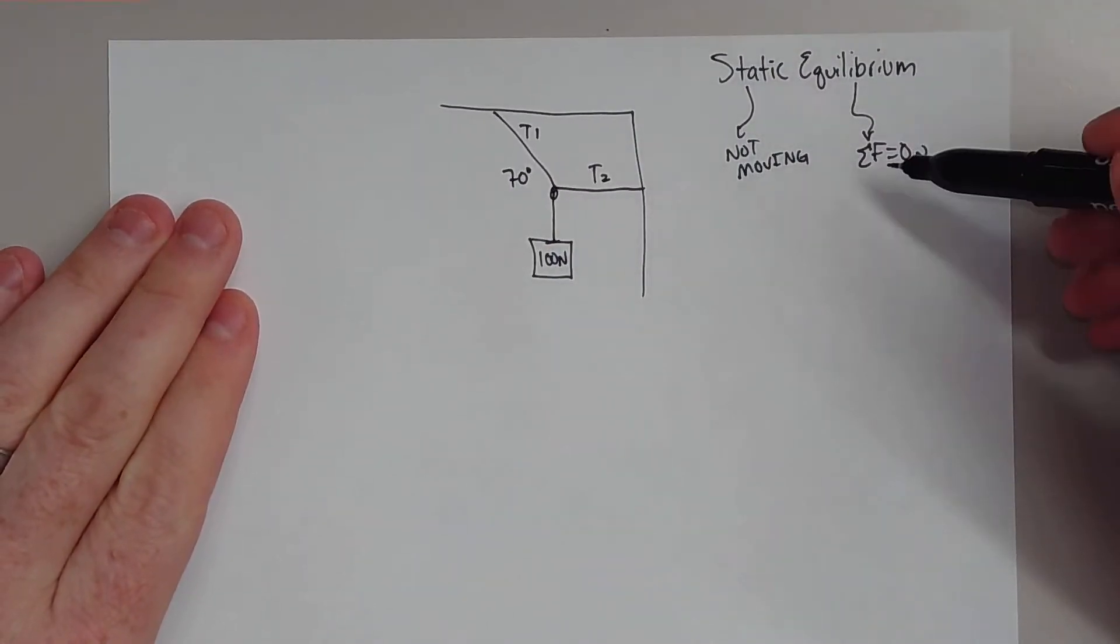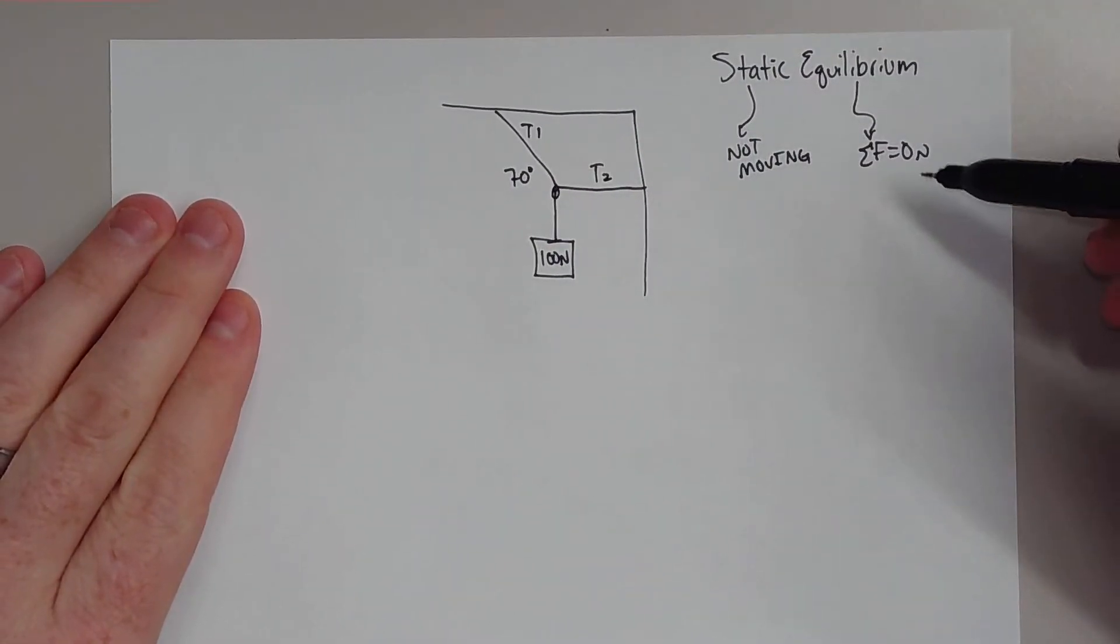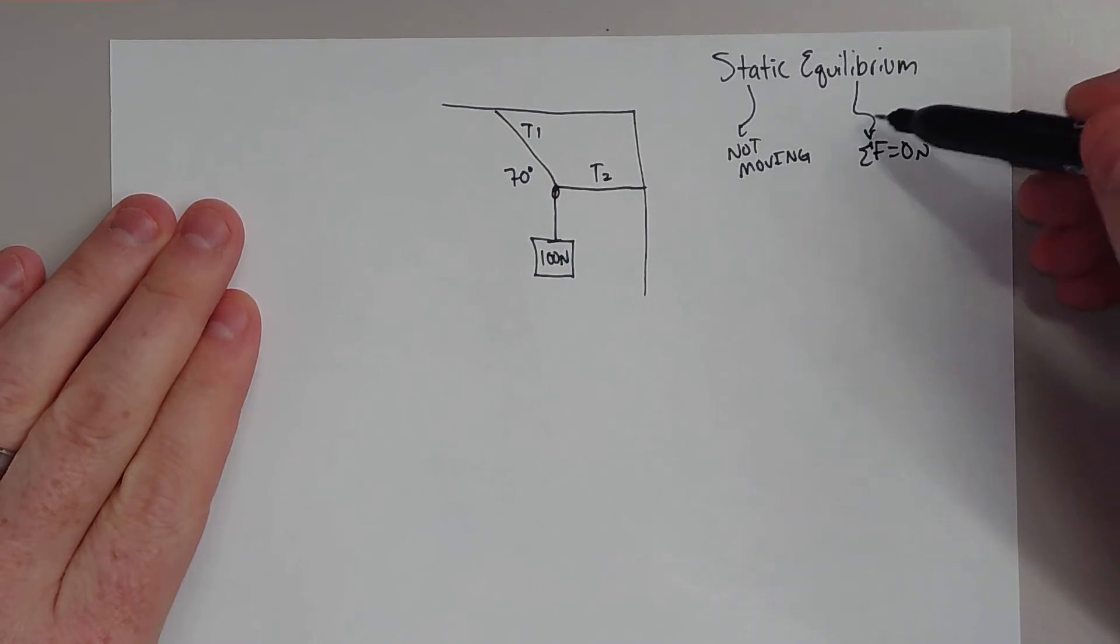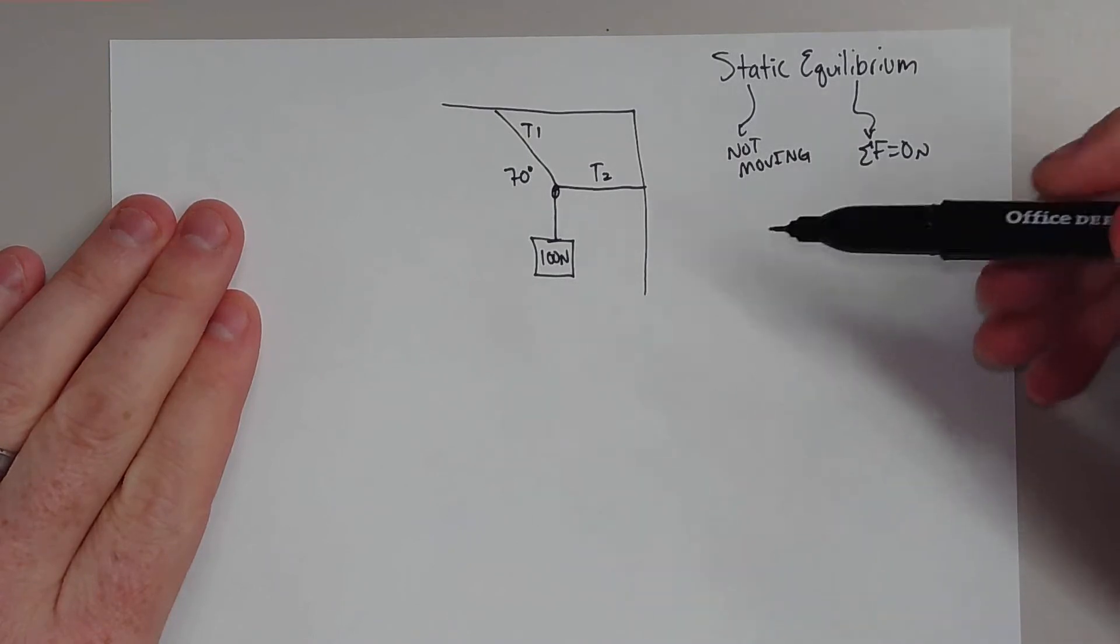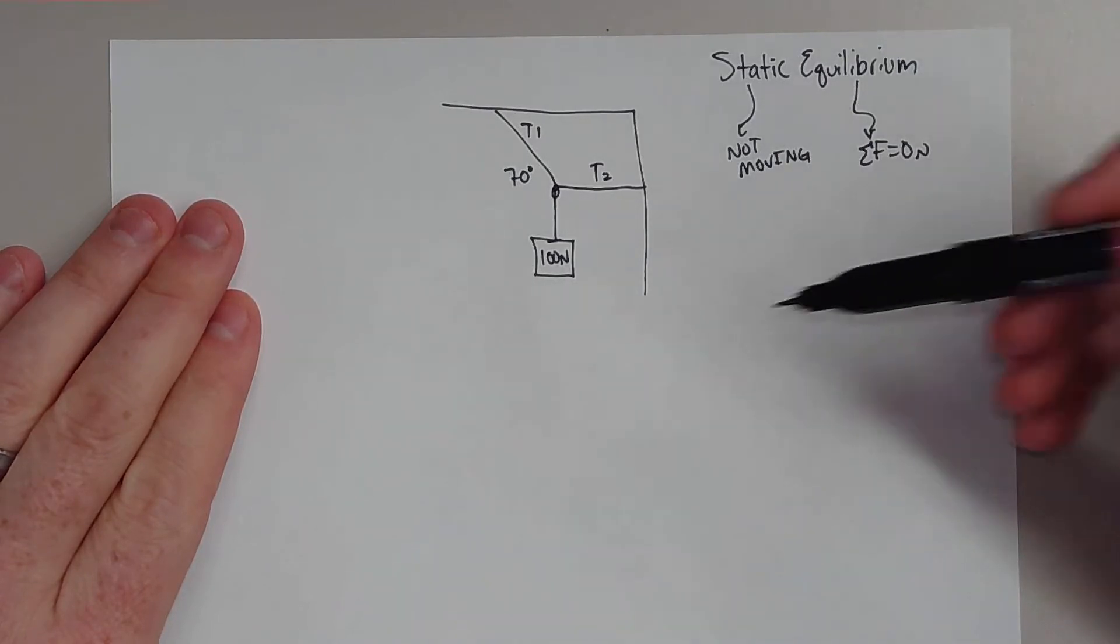Equilibrium means when all your forces equal zero. So we have an object or a system where all the forces equal zero, but it's not moving. There's another type called dynamic, when the system's moving, but we're not going to talk about that today.